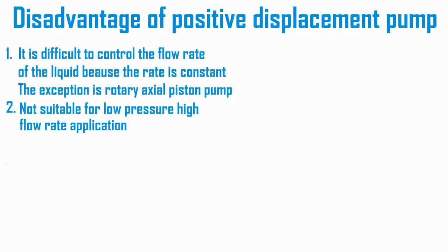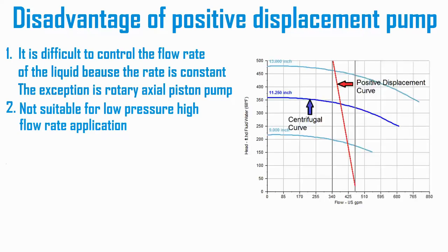Rotary positive displacement pumps are not suitable for low-viscosity liquids with low pressure and high flow rate applications, because the flow rate is almost constant regardless of discharge pressure. The centrifugal pump, on the other hand, will have a higher flow rate if the discharge pressure is lowered.